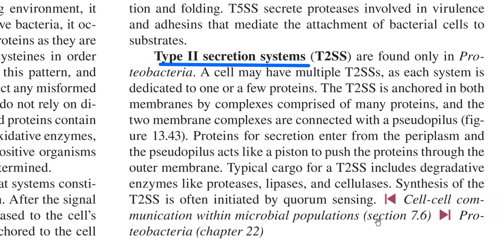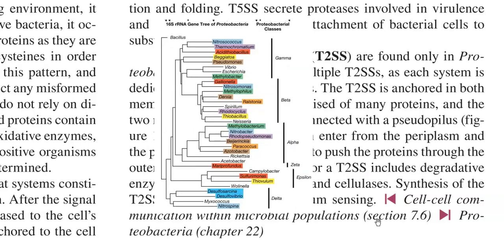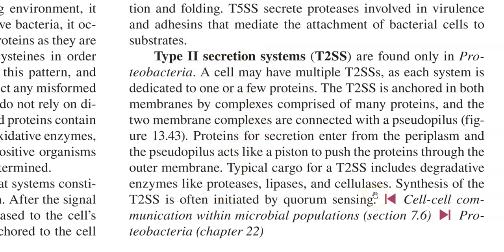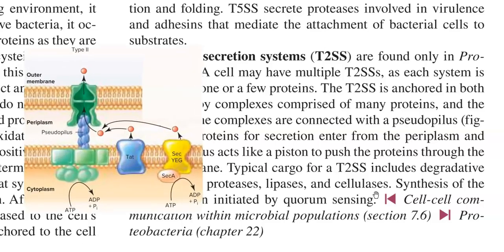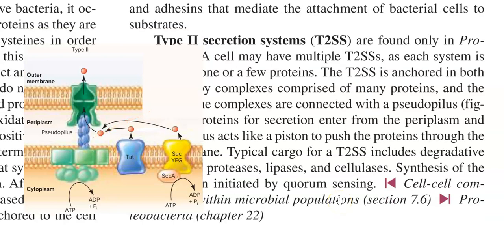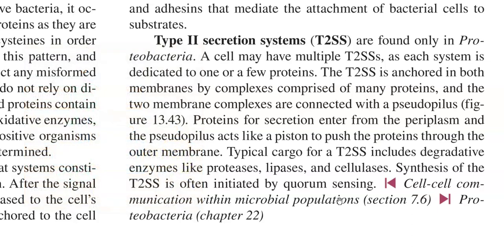The Type 2 secretion system is commonly found in the proteobacterial group, that is in the gram-negative dominant groups of bacteria. A bacterial cell may have multiple Type 2 secretion systems, each dedicated to secretion of one or a few proteins. These systems are anchored in both the cytoplasmic membrane and the outer membrane complexes, and the two membrane complexes are connected with the help of a pseudopilus, which acts like a piston pushing proteins through the outer membrane.